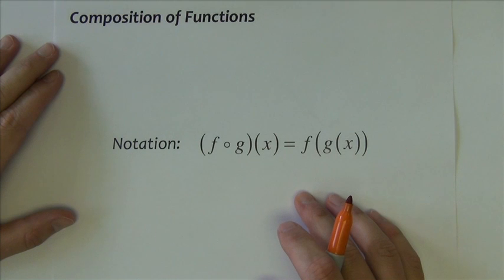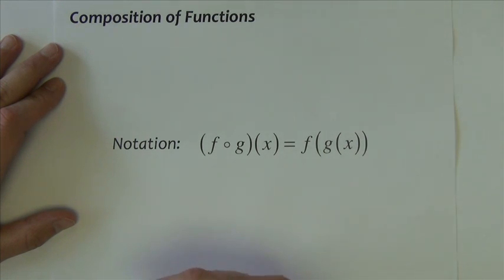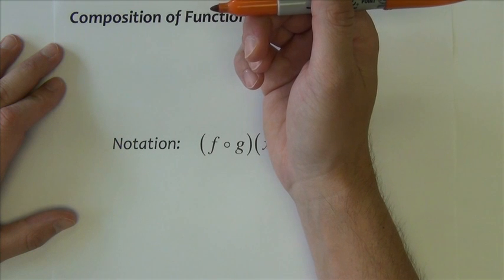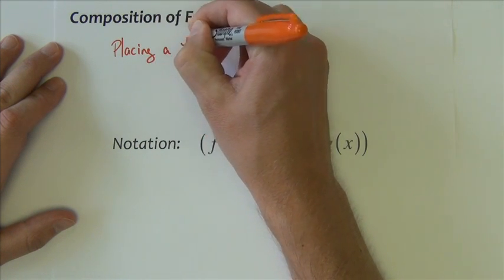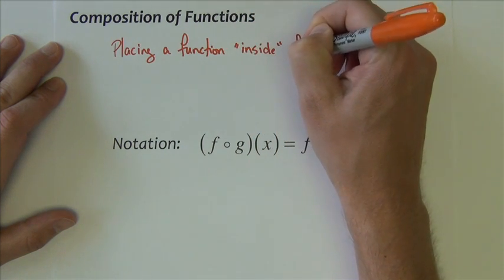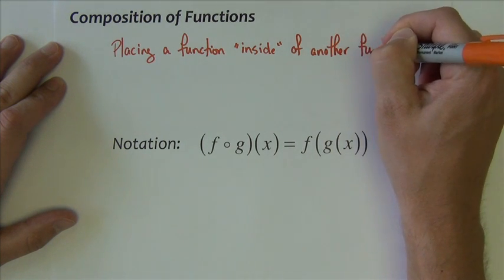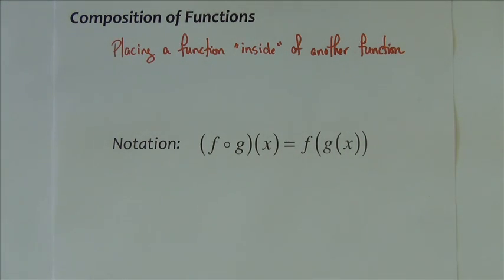The other way that we can combine functions, and I think it is the more interesting way to do it, as opposed to the four basic operations, is called a composition of functions. A composition of functions, if I can describe it as simply as I can, is placing a function inside of another function. So we're not adding, subtracting, we're not multiplying, but we're physically putting one into another one. We've done this sort of thing before with numbers. We've evaluated functions at numbers. Now we're going to evaluate functions at functions.